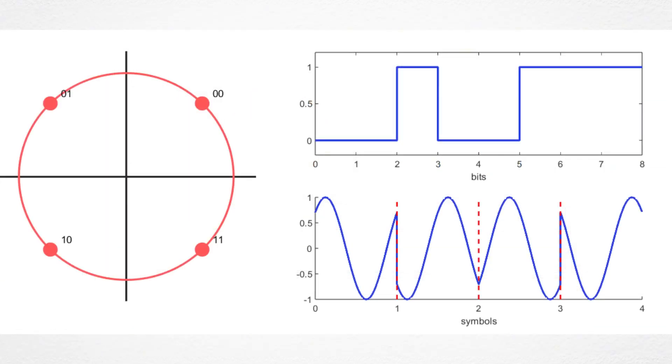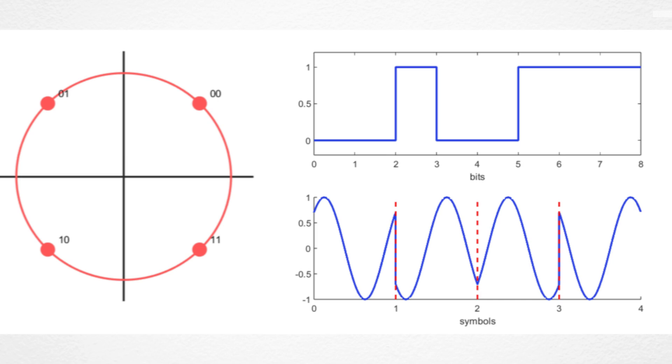As you can see in the plot, the constellation now has 4 states, each shifted by 45 degrees. On the right, you can also observe how the phase shifts in the modulated signal, as well as the fact that each PSK symbol now encodes 2 bits instead of 1.